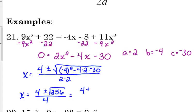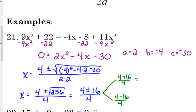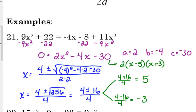Always check if the result under the square root is a perfect square — 256 is 16 squared. So we have 4 plus or minus 16, all over 4. Our two solutions come from: 4 plus 16 over 4, which is 20 over 4 = 5, and 4 minus 16 over 4, which is negative 12 over 4 = negative 3. We could verify this factors as 2 times (x minus 5)(x plus 3).